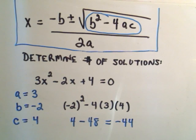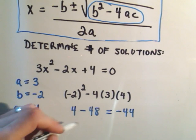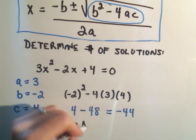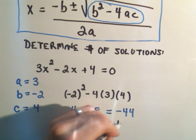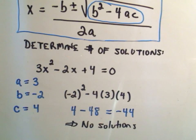And we're going to get a negative number out. So negative 44. And again, based on what we just saw a second ago, if that discriminant is a negative number, it means that you have no solutions.